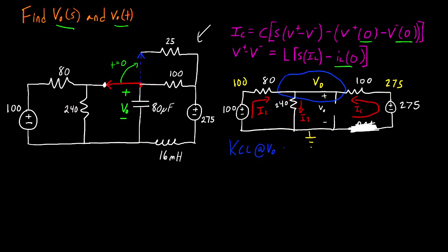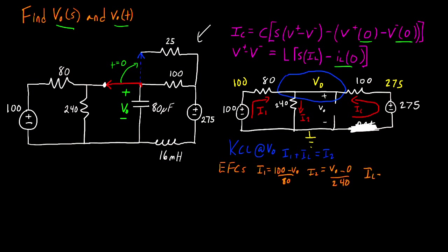We only have to write one KCL equation, and I'm going to write that for my node V_o. I1 and I_L are both pointing towards that node, so I can write I1 + I_L = I2. With that taken care of, I have three resistors to write Ohm's Law for. I1 = (100 − V_o)/80. For I2, V_o/240. And I_L = (275 − V_o)/100. At this point, I have four variables and four equations, so this is a solvable system.